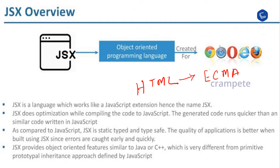The generated code runs quicker than similar code written in JavaScript, so the quality of the application is better when built using JSX since errors are caught early. JSX also provides object-oriented features similar to Java or C++, which is very different from the primitive prototypal inheritance approach defined by JavaScript. Just like XML, JSX tags have a tag name, attributes, and children.